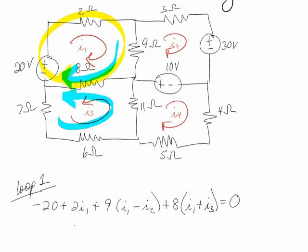So honestly, the hardest part about this is actually adding up numbers correctly. Like 2 and 9 is 11, and then 8 more is 19. So 19I1 minus 9I2 plus 8I3 is equal to 20.